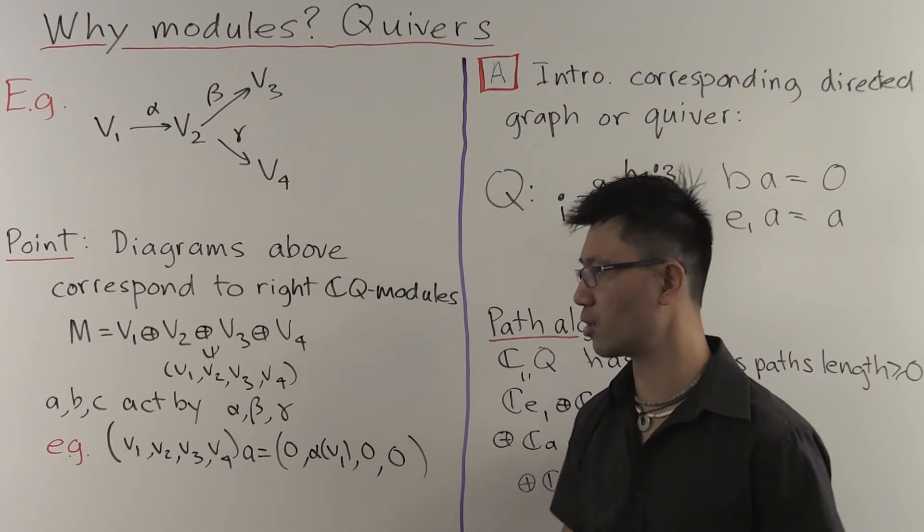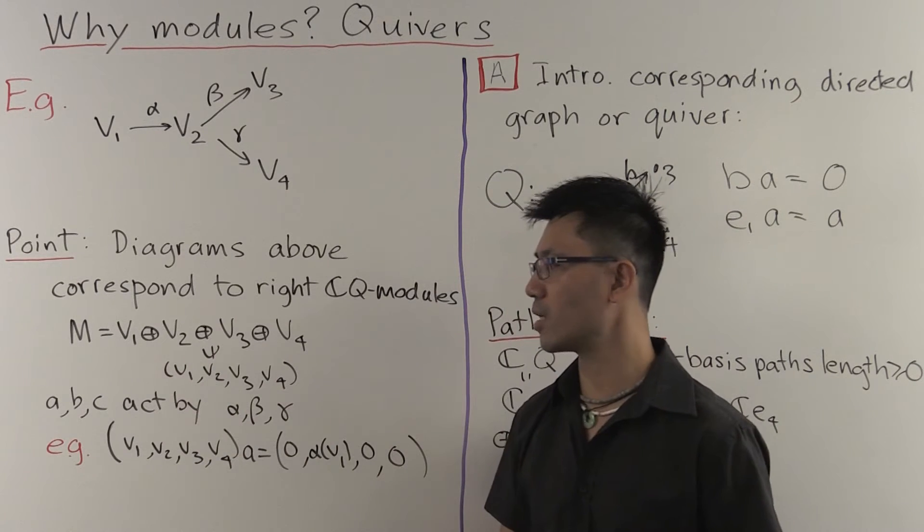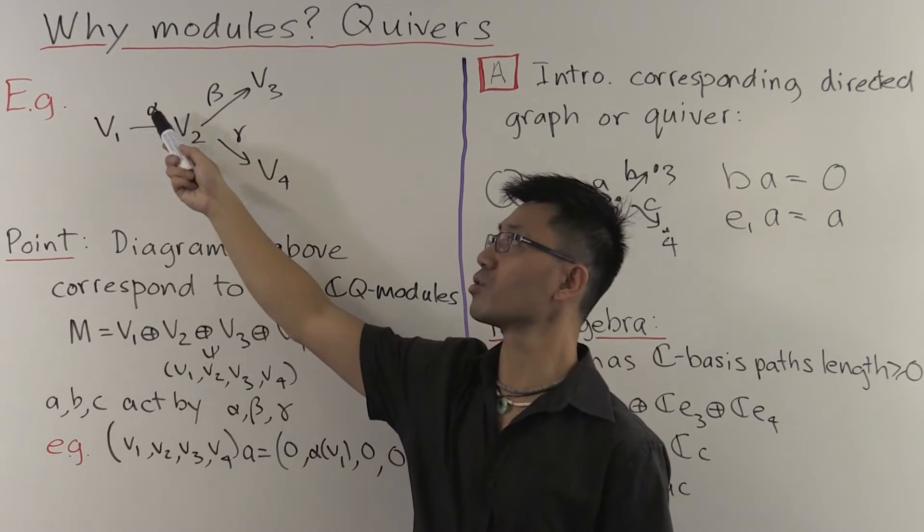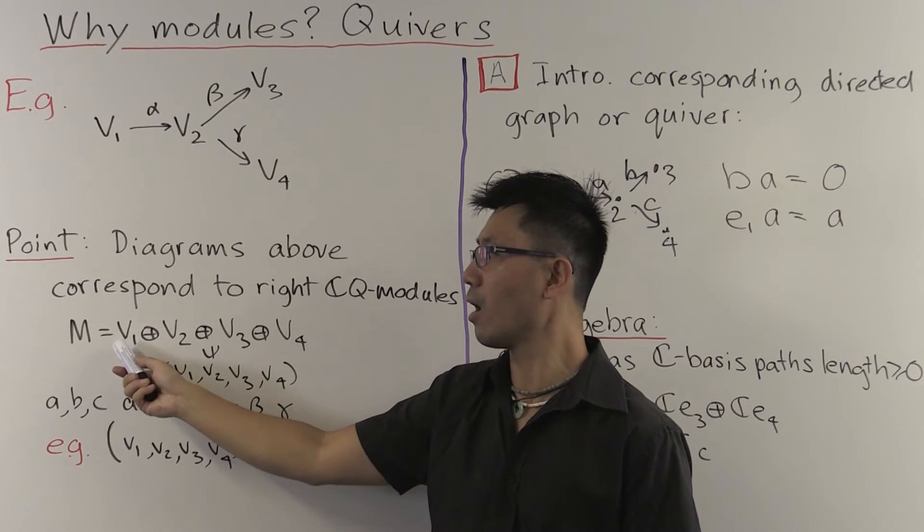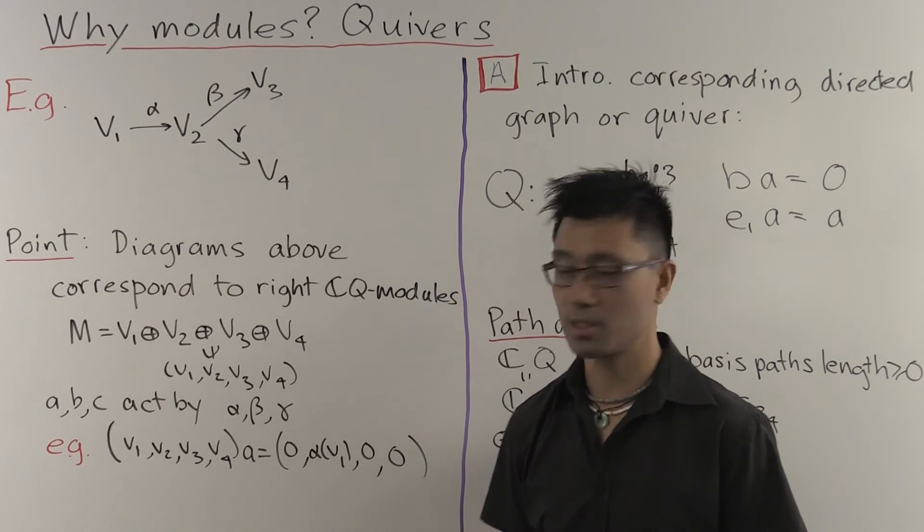And they essentially act by these linear maps, alpha, beta and gamma. Let me explain this a little bit more. So for example, A, what does that do? Essentially, A corresponds to alpha from V1 to V2.